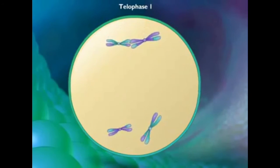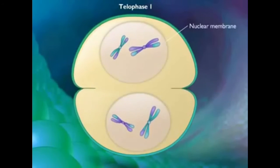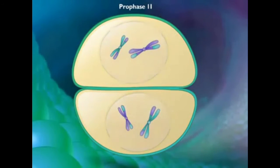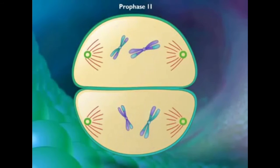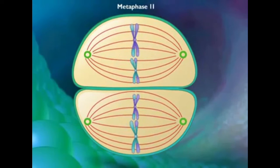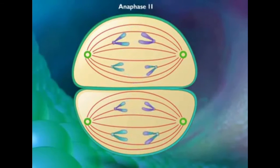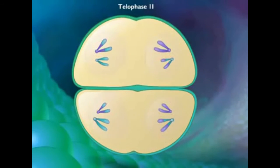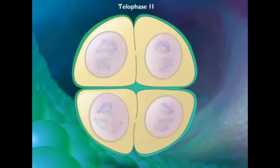Next, the cell progresses to meiosis II, where the cell goes through the same process as meiosis I, except it does not replicate its chromosomes. The cell then divides into two, and then both of these cells divide one more time, forming gametes. As you can see in the gametes, the chromosomes are now single, not paired.